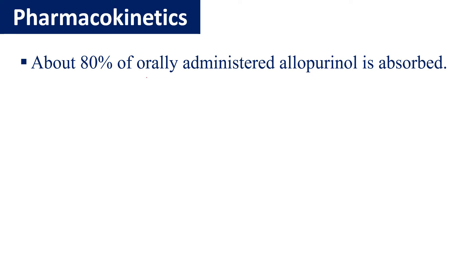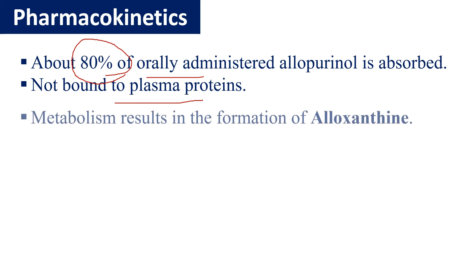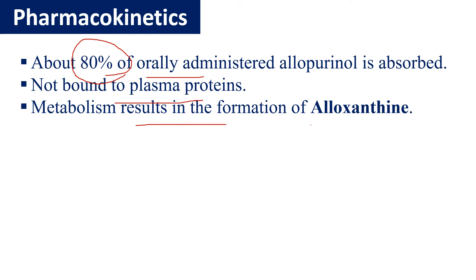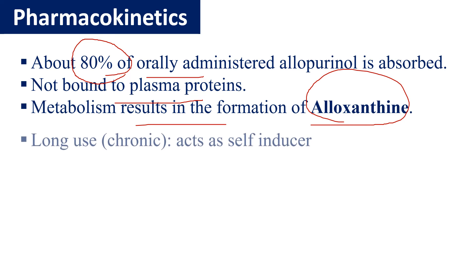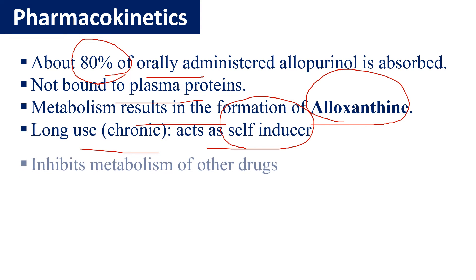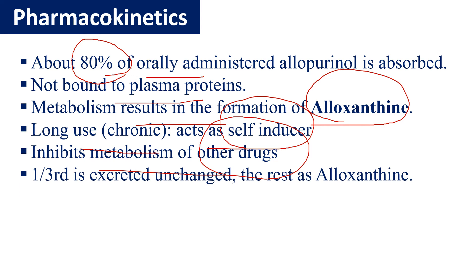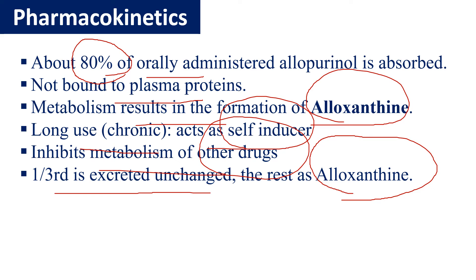Regarding pharmacokinetics: allopurinol is taken orally and around 80% of the drug is absorbed. It is not bound to plasma proteins. Metabolism of allopurinol results in the formation of alloxanthine. Long-term use of allopurinol acts as a self-inducer, meaning it induces its own metabolism. When taken with other drugs, it inhibits their metabolism. Around one third is excreted unchanged and the rest is excreted as alloxanthine.